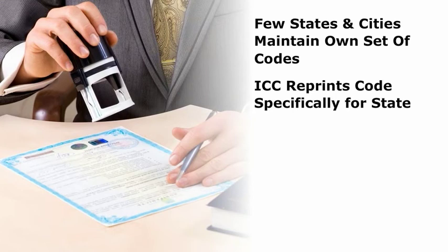For instance, the State of California and the City of New York maintained their own set of codes until recently. Both now use codes based on the I-Codes. Some jurisdictions have a complete set of unique codes, while others may just have one or two special code publications and use one of the available codes for everything else.